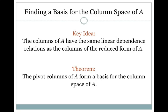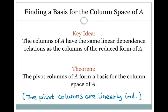Finding a basis for the column space of A is a little more complicated. The key idea is that the columns of A have the same linear dependence relation as the columns of the reduced form of A. So I always row reduce my matrix in order to find which columns are linearly independent. A theorem from this section says the pivot columns of A form a basis for the column space of A — those are the linearly independent columns. For a basis, it has to be linearly independent and has to span the entire space.